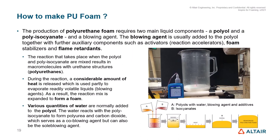Now let us look at how to make polyurethane foam. The production of polyurethane foam requires two main components: polyol and polyisocyanate. Along with these two, we also need a blowing agent. The blowing agent is usually added to the polyol together with auxiliary components such as activators, which are reaction accelerators, foam stabilizers, or foam retardants.